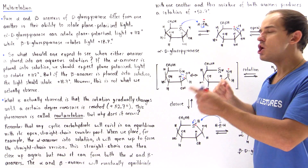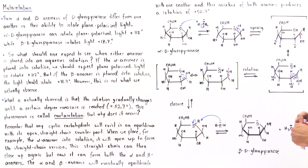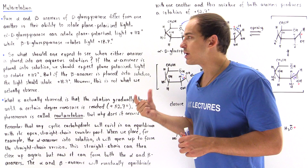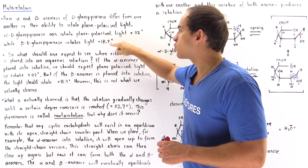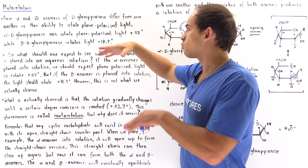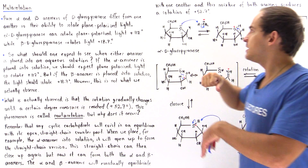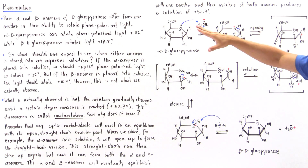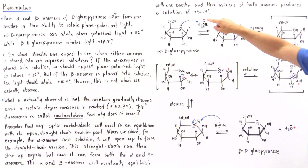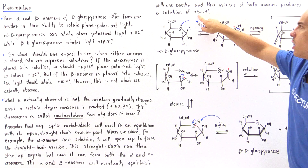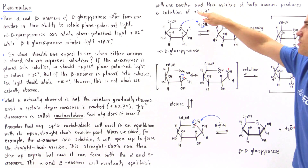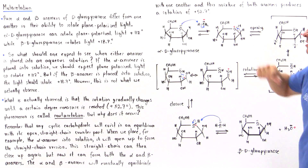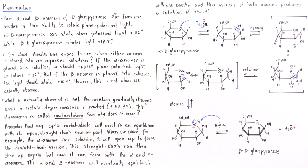At this point, once equilibrium has been achieved, our plane polarized light will no longer rotate by the alpha value or the beta value — it will rotate a certain quantity in between. For the case of D-glucopyranose, this is positive 52.7 degrees in the clockwise positive direction.